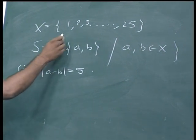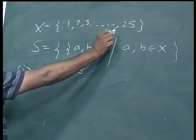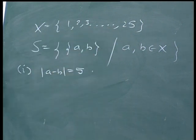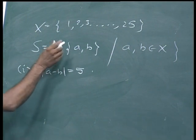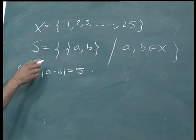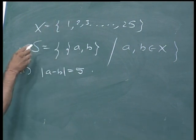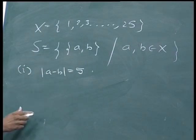Our main universal set is X equal to 1 to 25. It contains 25 integers, and I want to select some two integers from X and from the set S subject to different conditions.